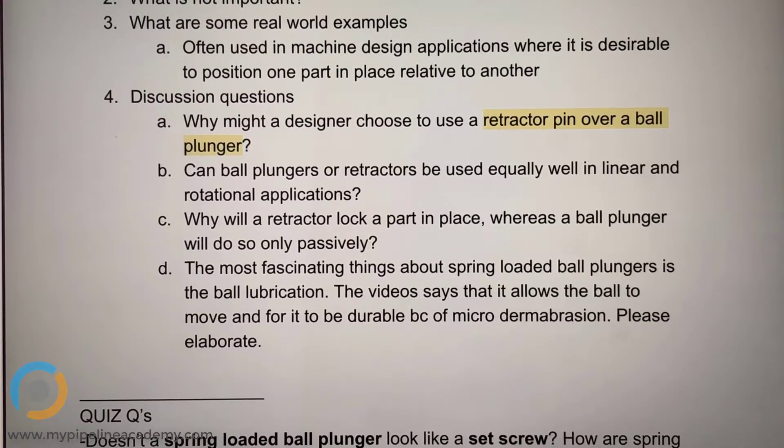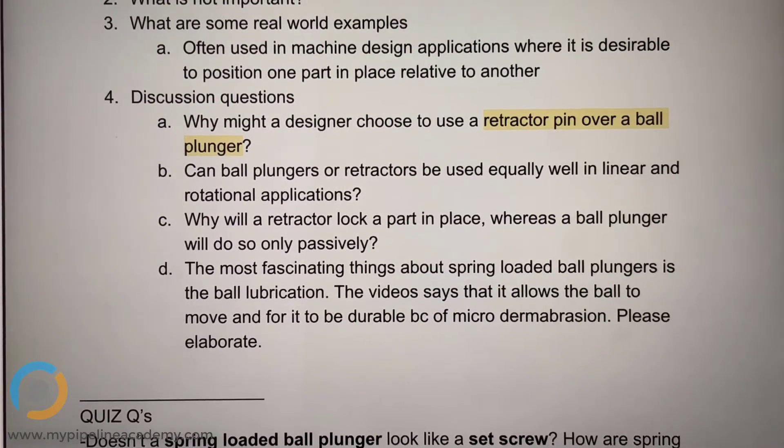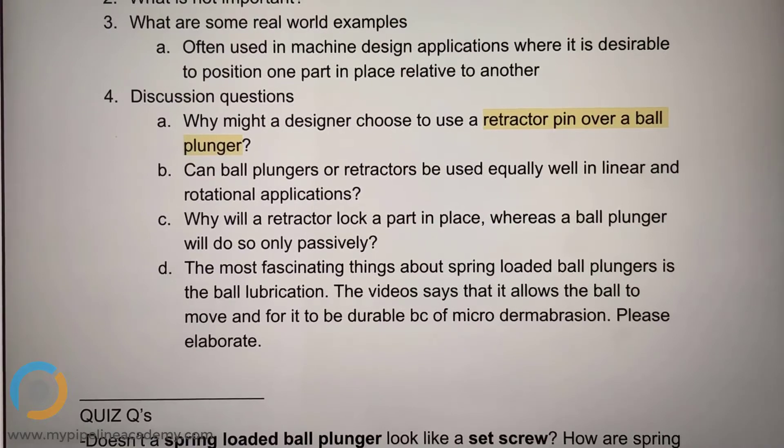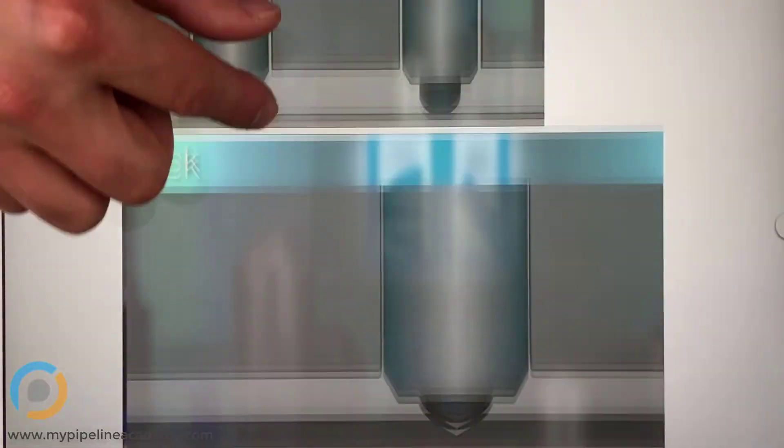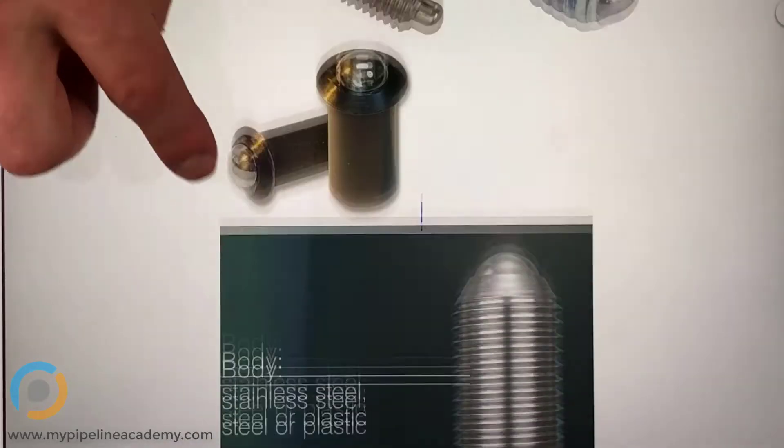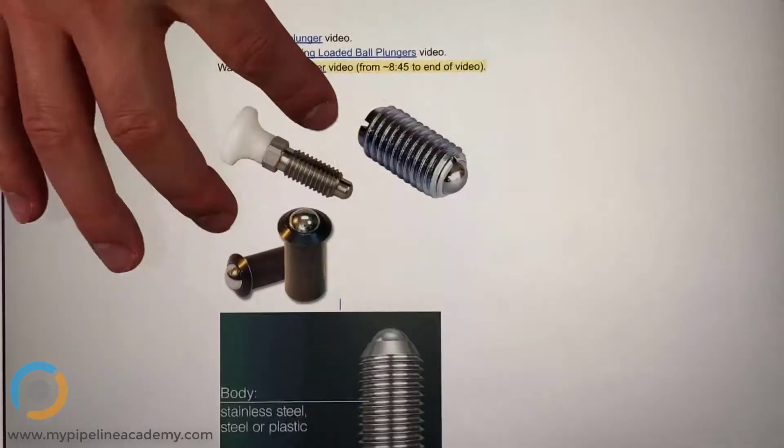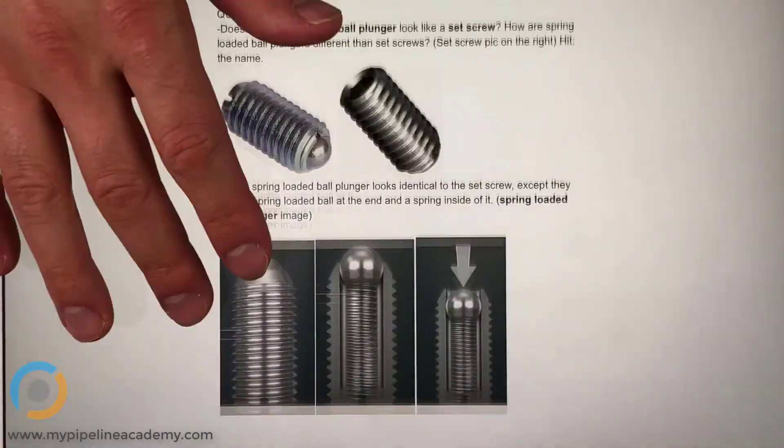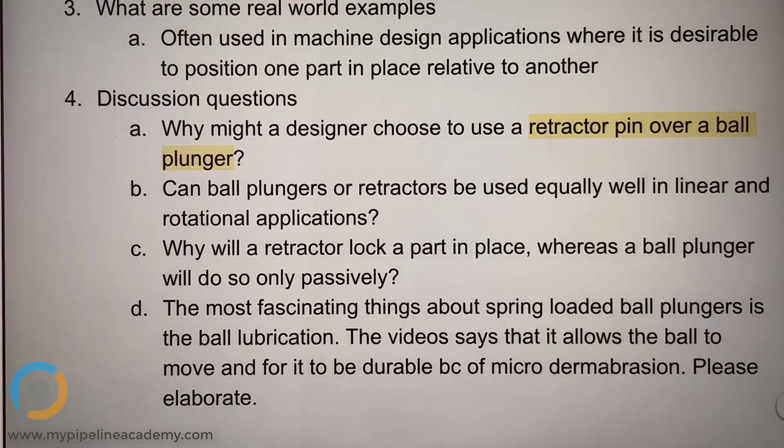Why will a retractor lock a part in place whereas a ball plunger will do so only passively? The length of the head. Is that the right term? The head? Yeah. Length of the head. I would say the head is the top where you actually pull the retractor. I would say probably the pin, the length of the pin. The length of the pin. Yeah. Longer. Or the plunger.